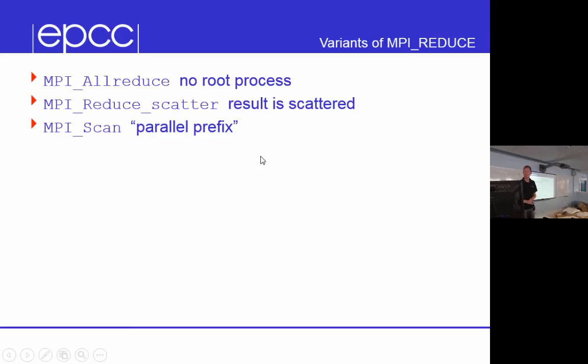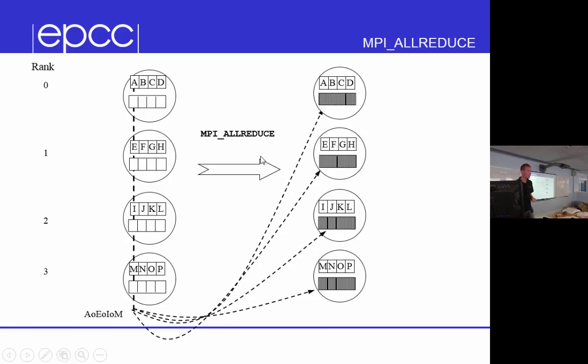Now, there's a number of different variants of MPI reduce, which I think are probably more useful than the actual vanilla reduce itself. And the first one is an MPI or reduce. And basically what this is, is an MPI reduce without a root. So the value of this reduction gets written to every process in the communicator. So here, exactly like with the reduce, we do A, operator E, operator I, operator M. But then this value, as we've computed, gets written to every process.